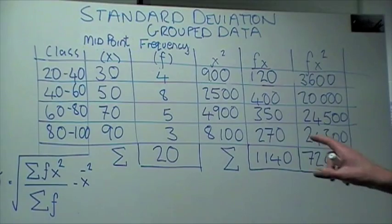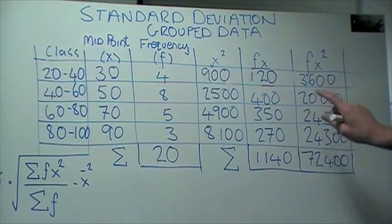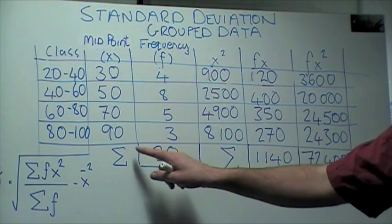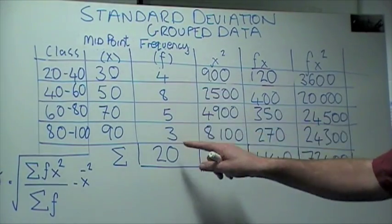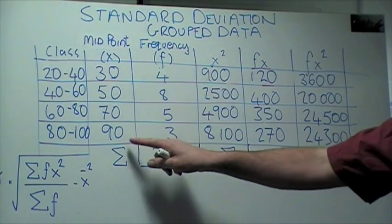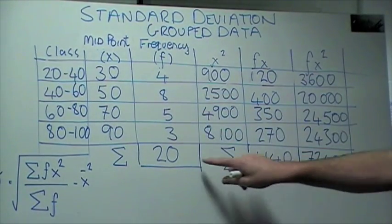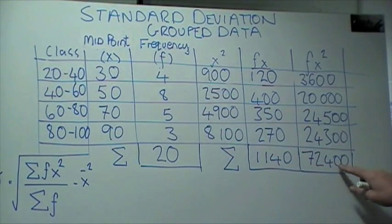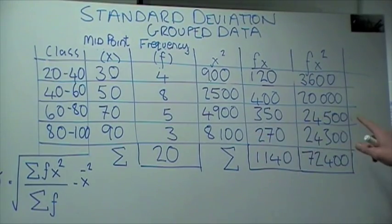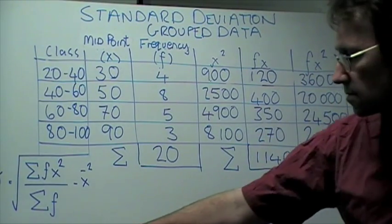Okay, now that the table's complete, what we have to look at is the sum of these columns here. Now, the sum is just purely saying add all these up and put the total in here. So once we've done that, we need to calculate the mean.